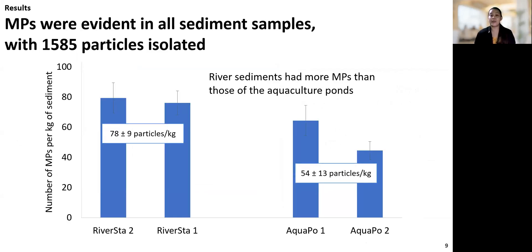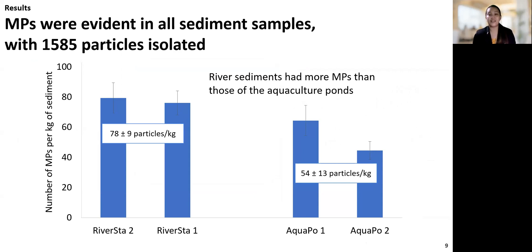In this study, MPs were evident in all sediment samples, with a total of 1,585 particles isolated. Overall, a higher abundance of microplastics were found in river sediments, with a mean abundance of 78 particles per kilogram, than in the aquaculture pond sediments with a mean of only 54 particles per kilogram. Compared with other studies involving surface sediments of rivers, these figures are relatively lower.